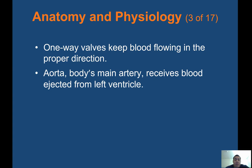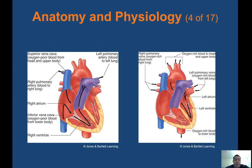The aorta is the body's main artery and receives blood ejected from the left ventricle. Blood flows from the vena cavae into the right atrium, down to the right ventricle, back to the lungs to get oxygenated, then into the left atrium as oxygenated blood, down to the left ventricle, and then out through the aorta — back up top and down to the lower body.